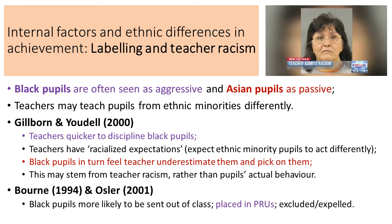Born and Lita Osler also found that black pupils are more likely to be sent out of class, placed in pupil referral units, excluded, or expelled. If we think about all the different forms of punishment that schools sometimes use, black or black Asian minority ethnic pupils are more likely to be on the receiving end of these punishments than members of the white British majority.